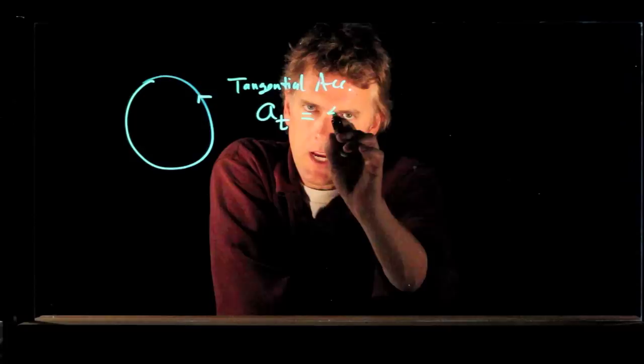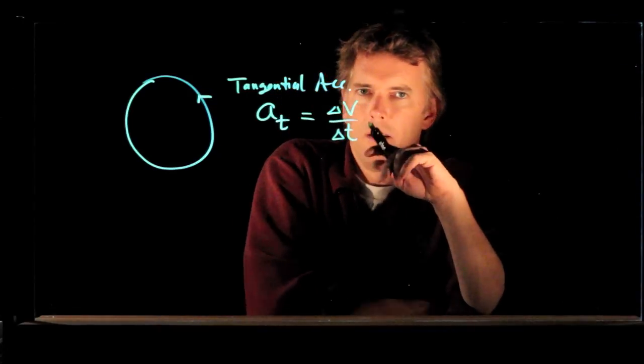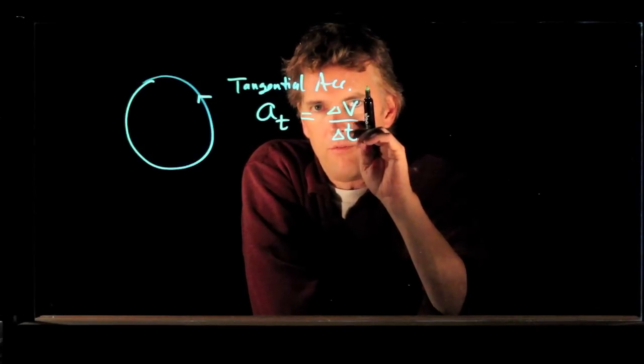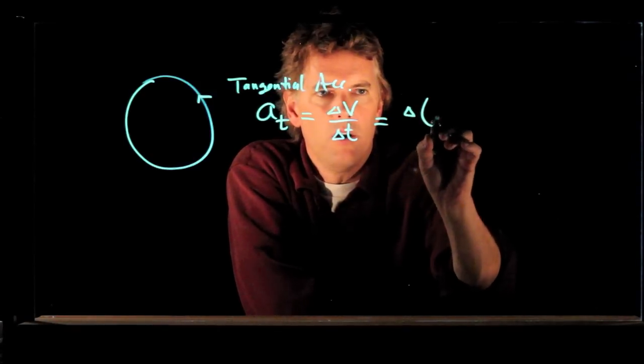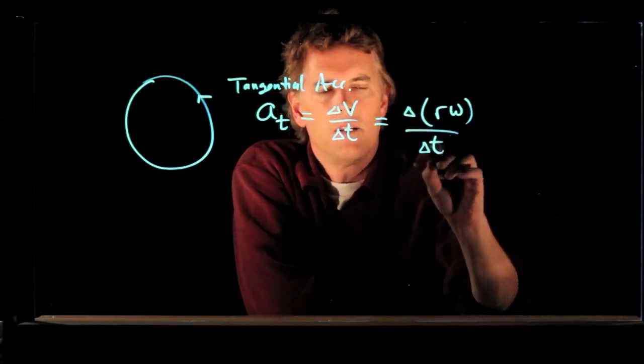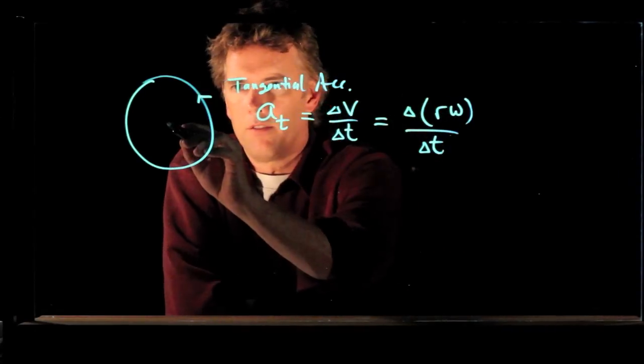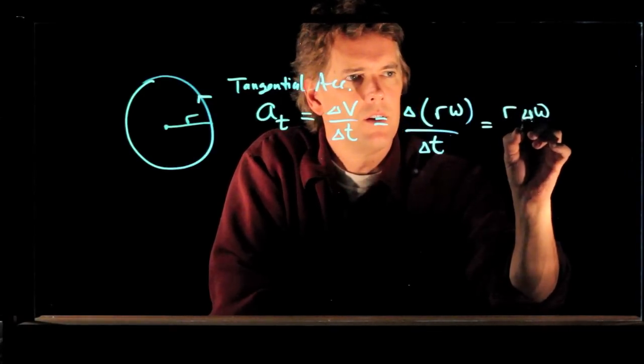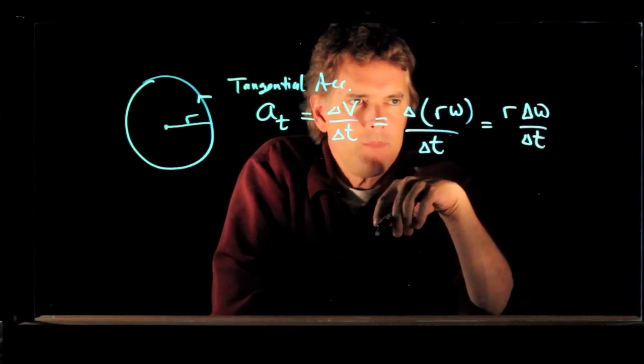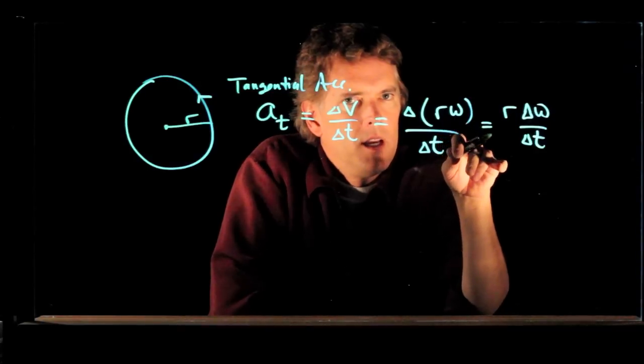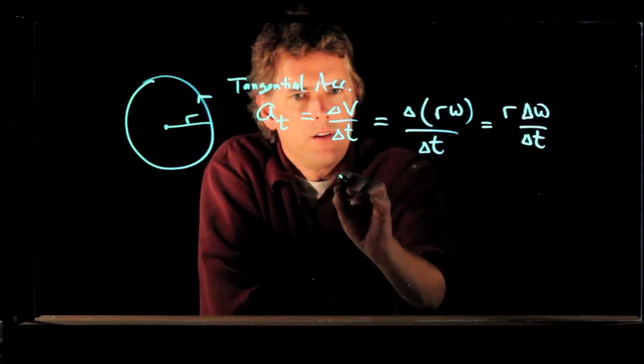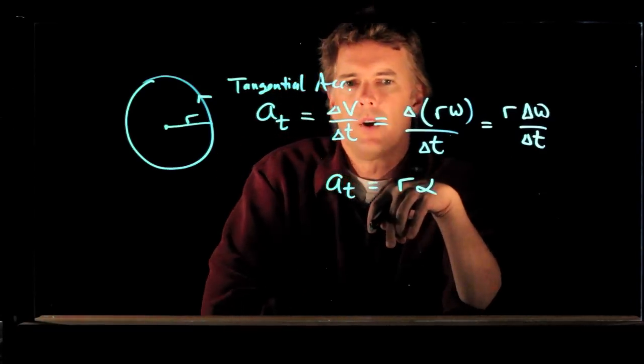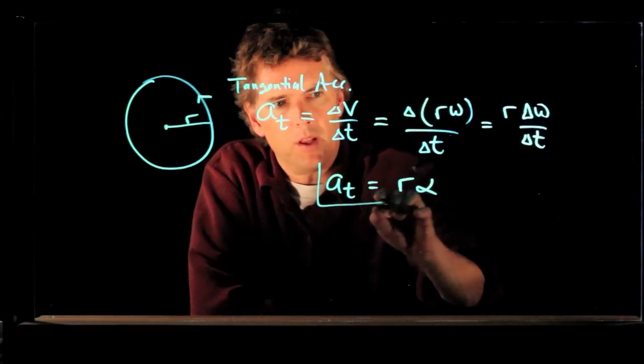Well, it is just the change in the speed divided by the amount of time it took to do that. And we know now what V is, right? V is equal to R omega. R doesn't change. R is the radius of the circle. That doesn't change. So we can rewrite this as R delta omega over delta T. And delta omega over delta T is our angular acceleration. This is the relationship right here for tangential acceleration.